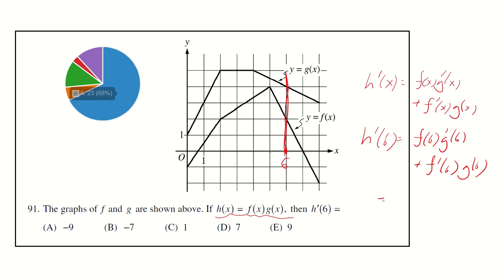g prime 6 equals negative half and f prime 6 equals negative 2. So the answer is negative 1 minus 8, that is negative 9. The answer is A.